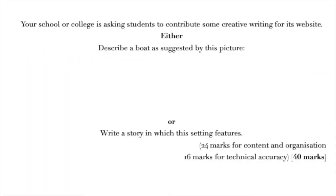Let's look at a typical question you might get in class, for homework, or in a GCSE examination: 'Your school or college is asking students to contribute creative writing for its website. Describe a boat as suggested by this picture, or write a story in which this setting features.' We're going to look at the first task — describe a boat. You might notice there is no picture here; I've removed it so we can picture the boat through my description first.